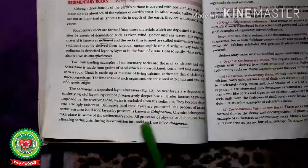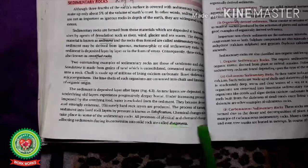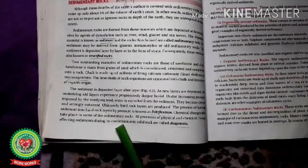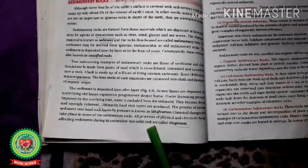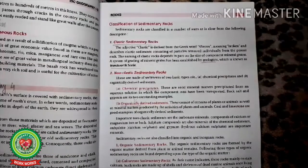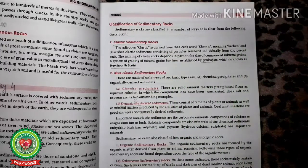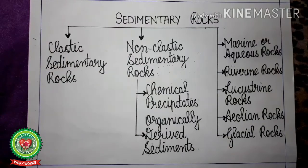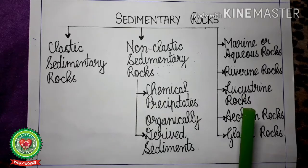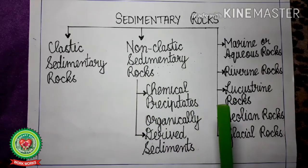Chemical changes also take place in sedimentary rocks. All physical and chemical processes affecting sediments during conversion into solid rock are called diagenesis. Now let us discuss the classification of sedimentary rocks from page 73. Sedimentary rocks are classified on the basis of their texture, chemical composition, location, and mode of formation — meaning which agents have created the sedimentary rocks.